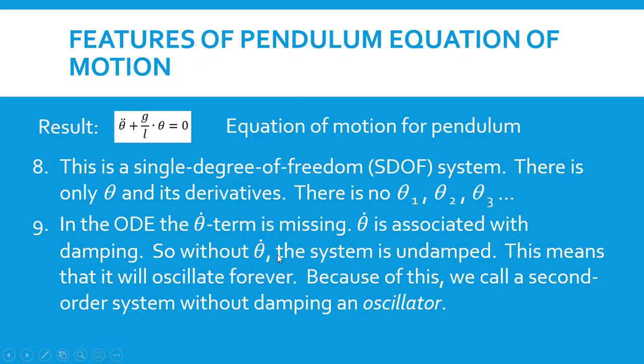Now, of course, there's no such thing as a physical system that has no damping in it. If you had a real pendulum and you set it into motion, what would happen is that eventually it would wind down and not oscillate at all. Depending upon how much friction you have in your system, that could take a little bit of time or a lot of time.